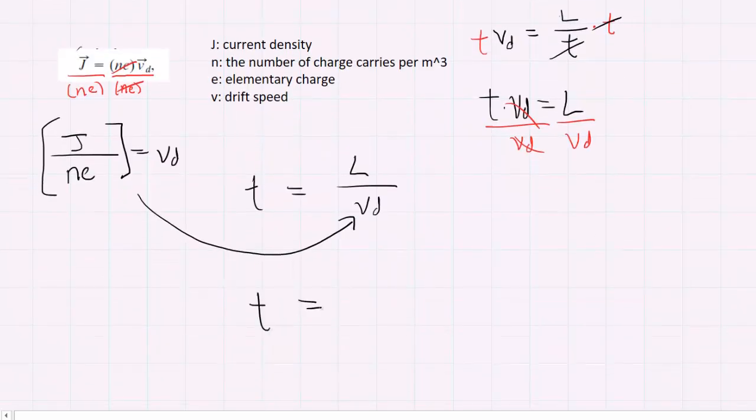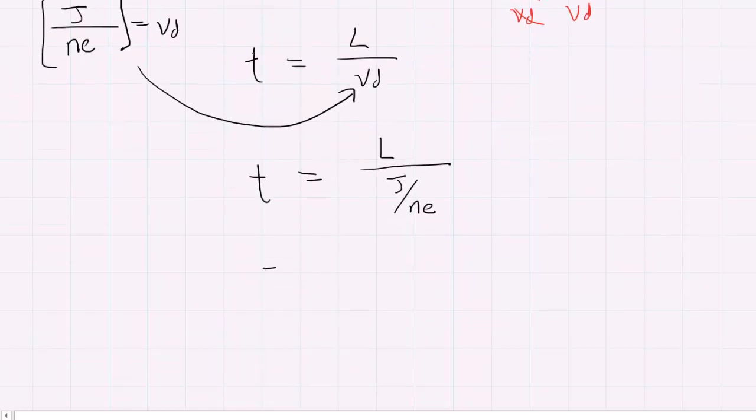Now we have time equals the length divided by current density divided by ne. We can do algebraic simplification by performing keep, change, flip: keep the L, change division to multiplication, and flip this fraction upside down. So you'll have ne over the current density.